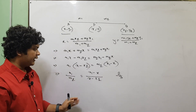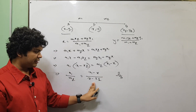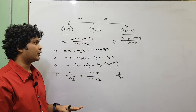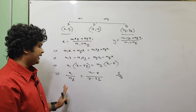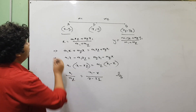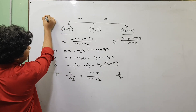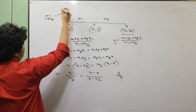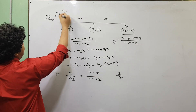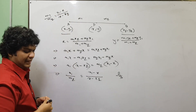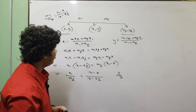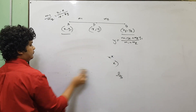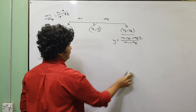m1 by m2 is equal to x1 minus x divided by x minus x2. We will write the same thing: m1 divided by m2 is equal to x1 minus x divided by x minus x2.